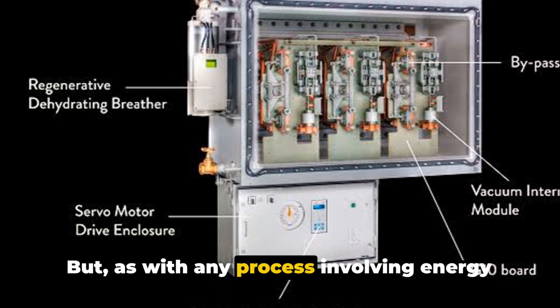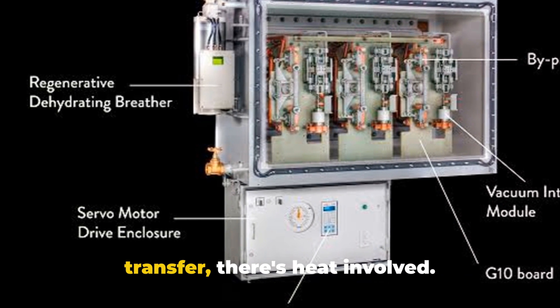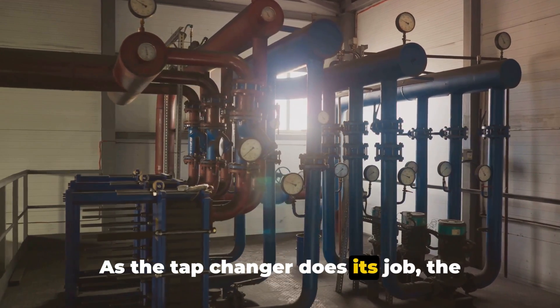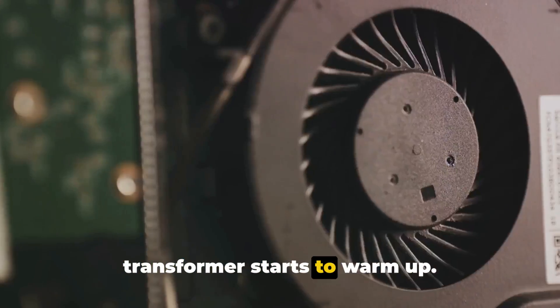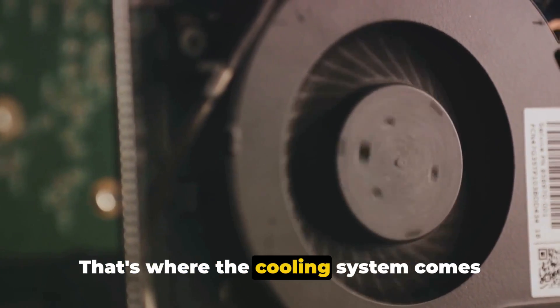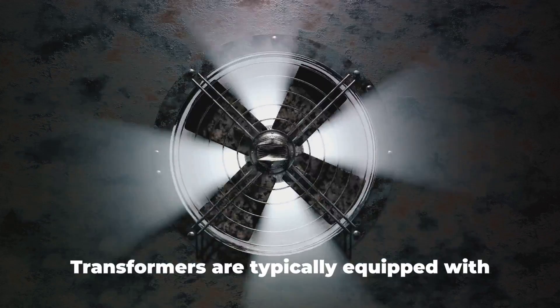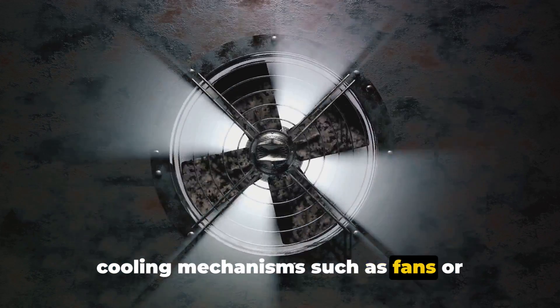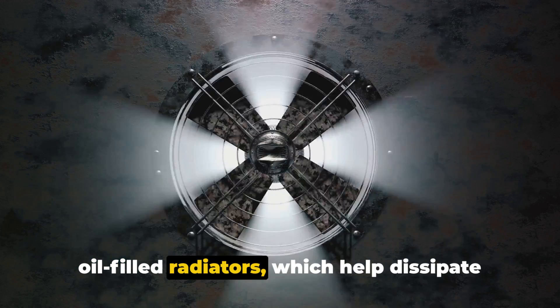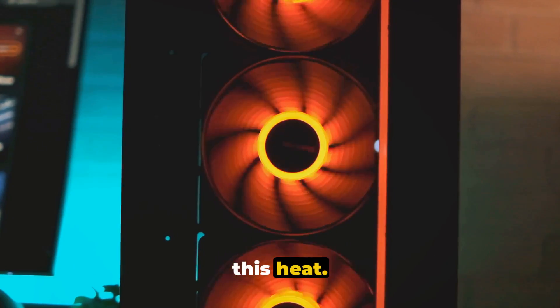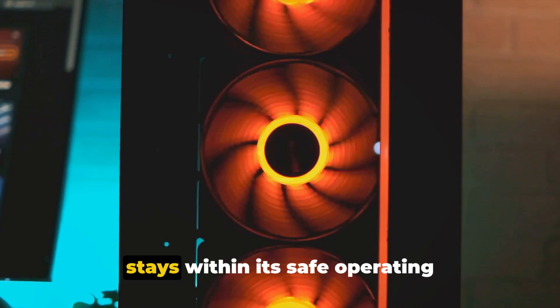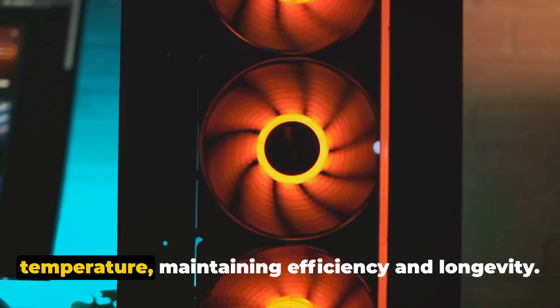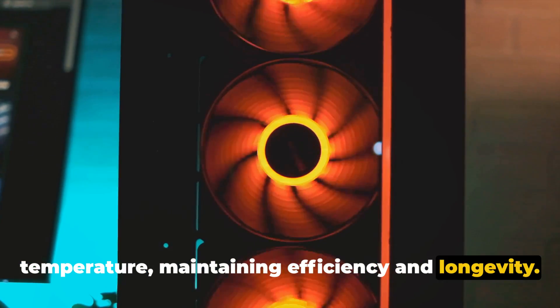But as with any process involving energy transfer, there's heat involved. As the tap changer does its job, the transformer starts to warm up. That's where the cooling system comes into play. Transformers are typically equipped with cooling mechanisms, such as fans or oil-filled radiators, which help dissipate this heat. These systems ensure the transformer stays within its safe operating temperature, maintaining efficiency and longevity.